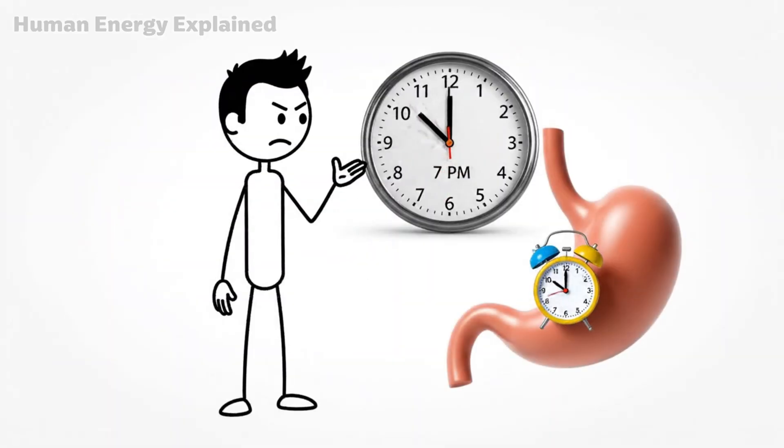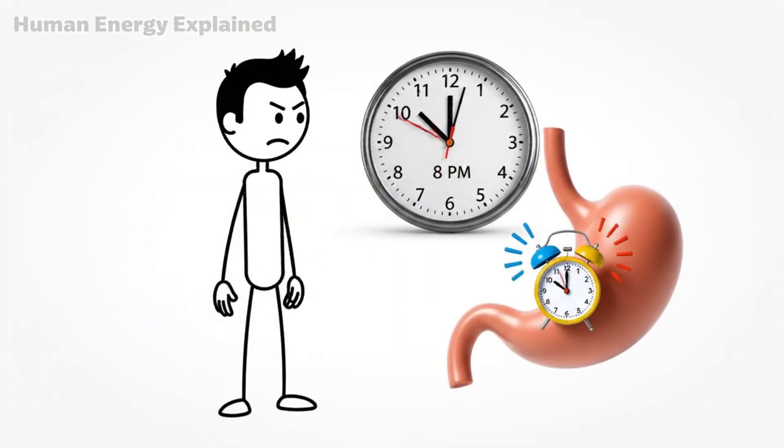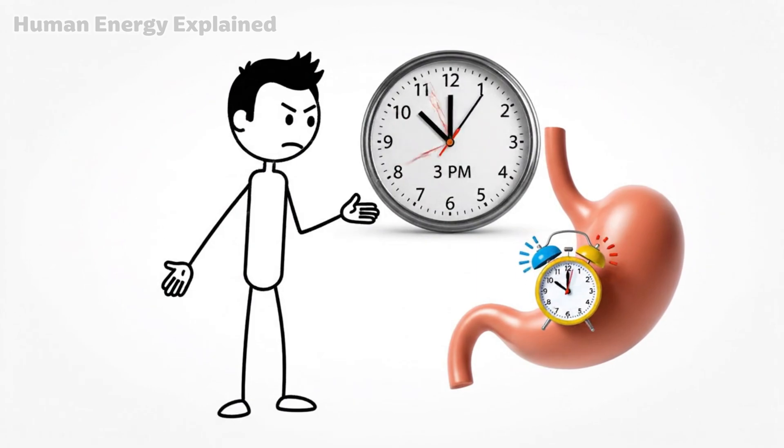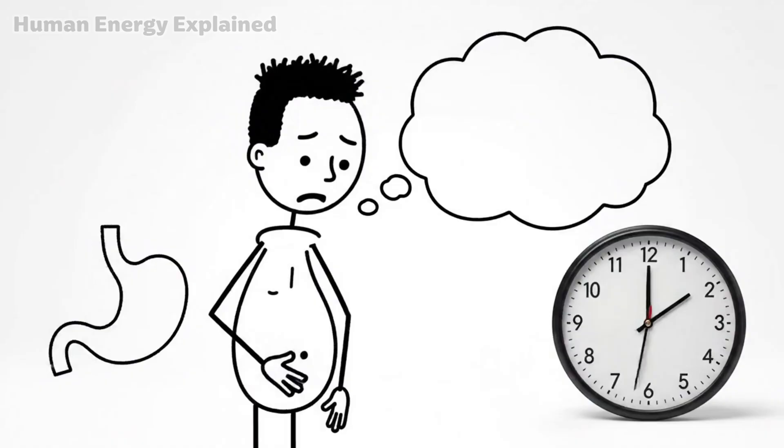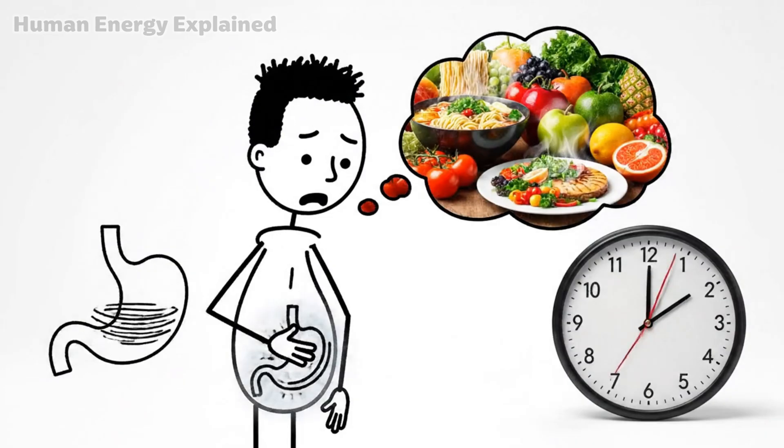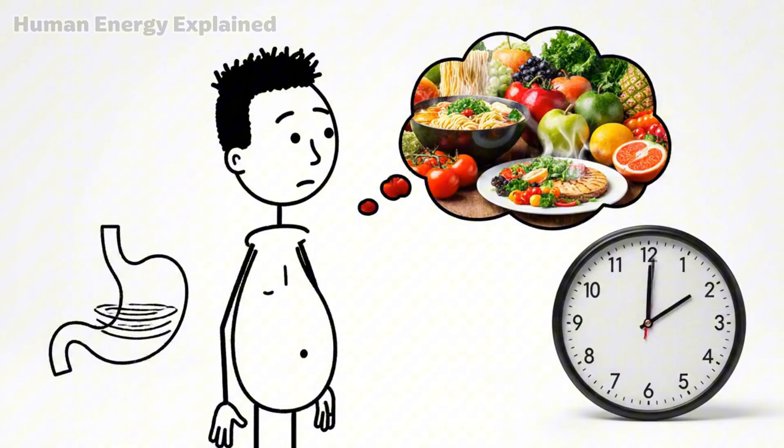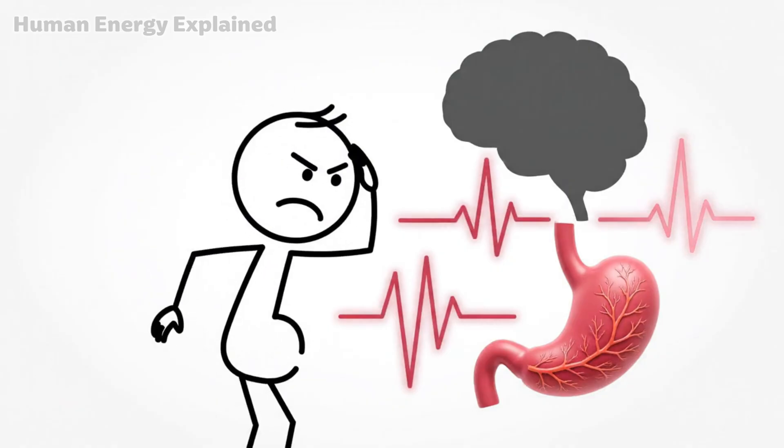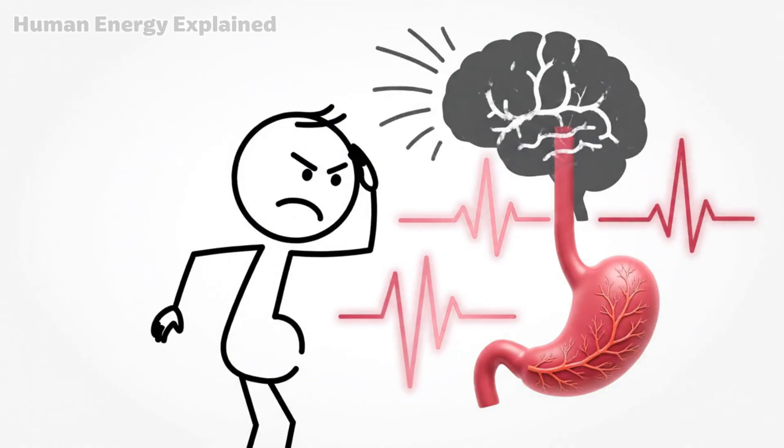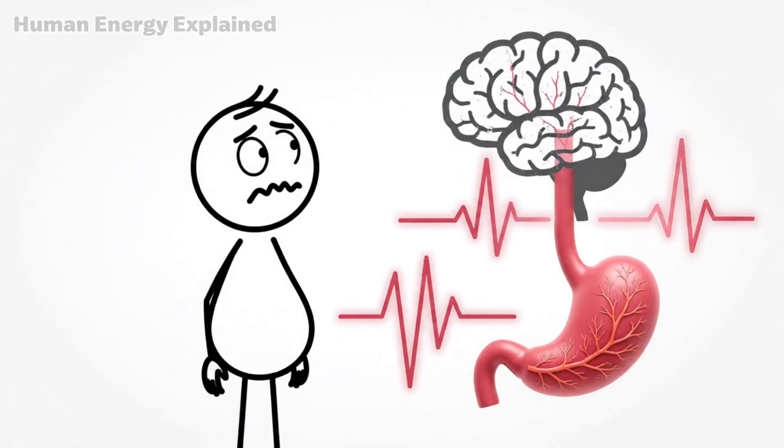This is why day one feels brutal. Your ghrelin alarm is ringing at every scheduled mealtime. And you're ignoring it. Your stomach growls. You think about food constantly. You watch the clock counting hours until dinner. You might feel irritable, maybe a little light-headed. Your body is asking a very reasonable question. Where is the food I was promised?